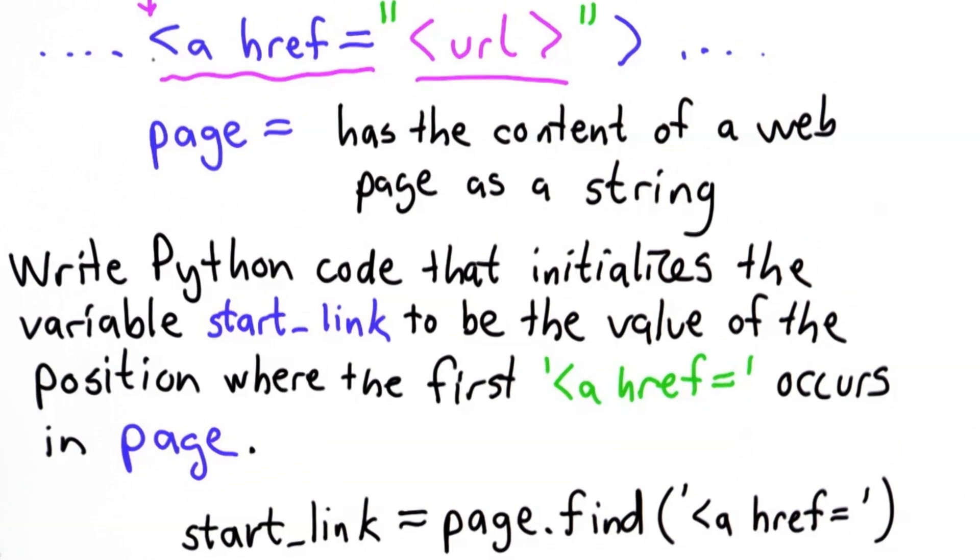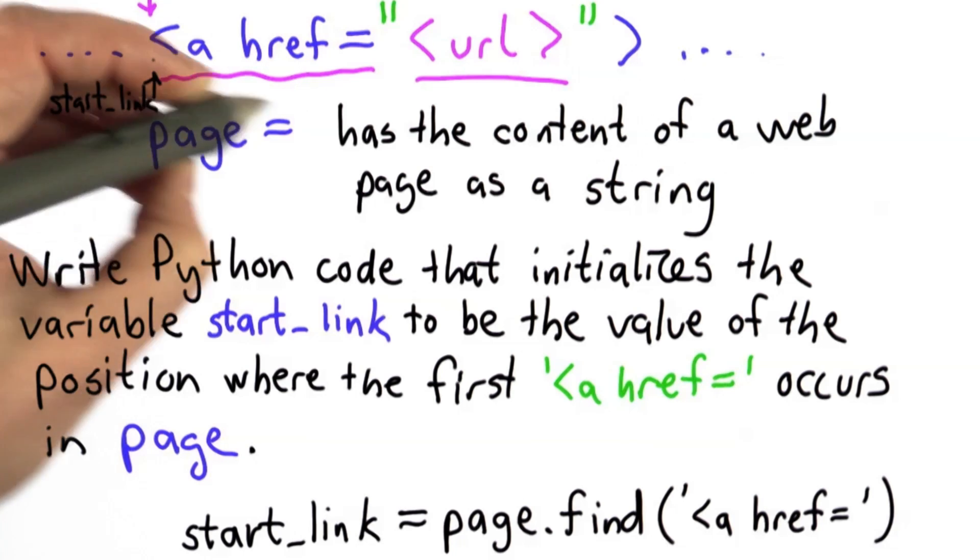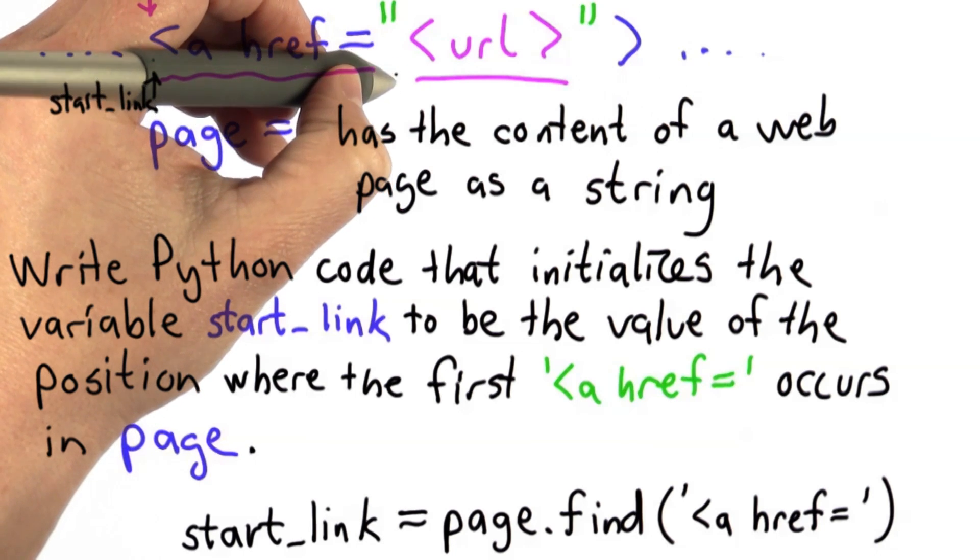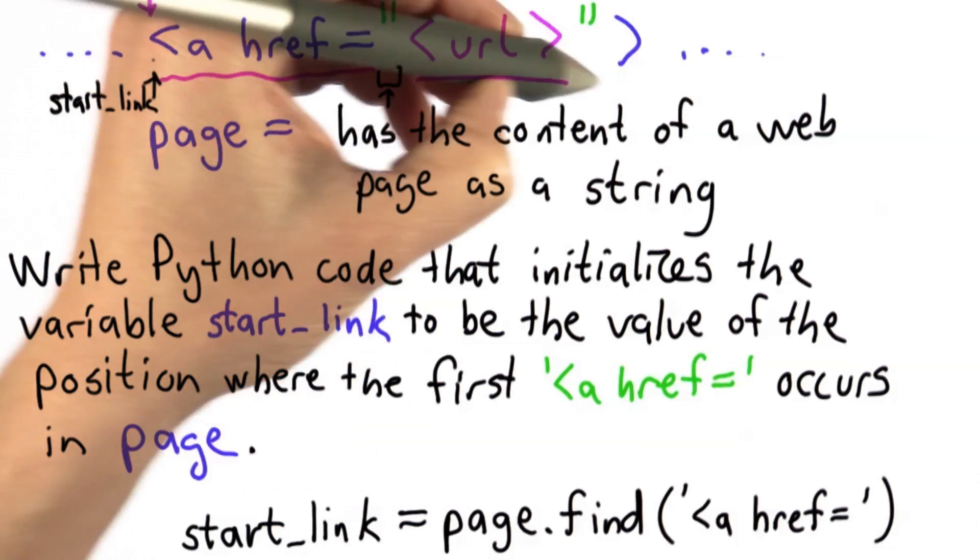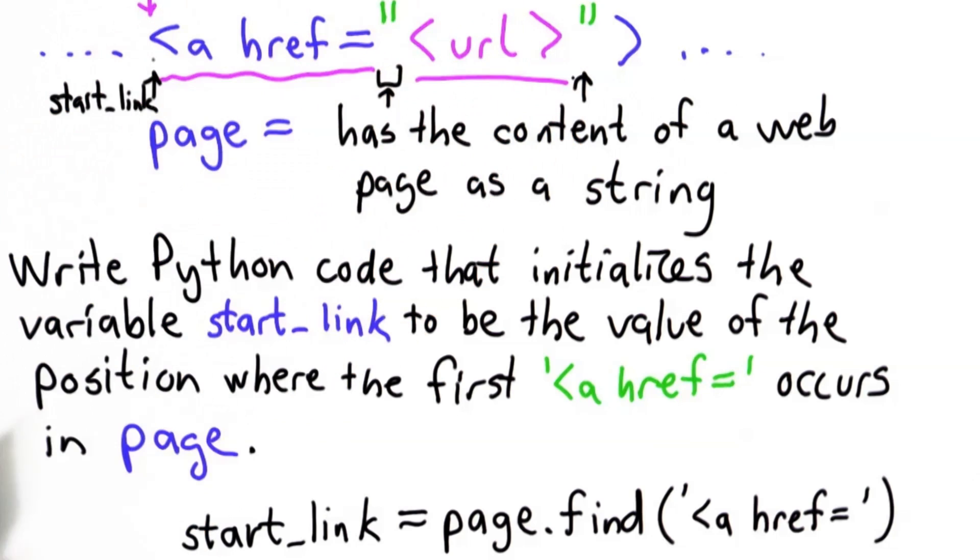Now what we want to do is extract the URL. So we found this position, that's going to be the value of start_link. Now our goal is to extract this URL, and the URL starts from the first double quote that we find after start_link and it ends with the second double quote.